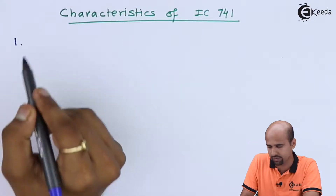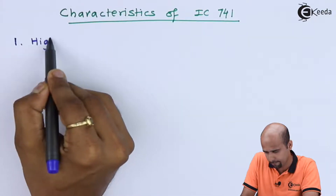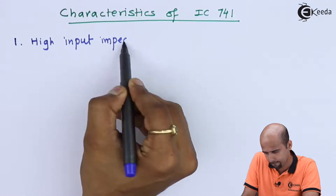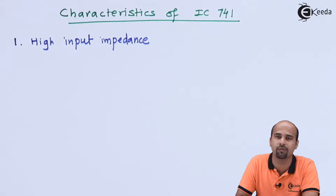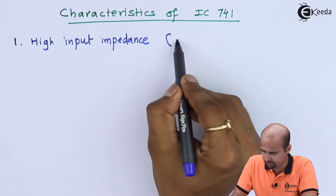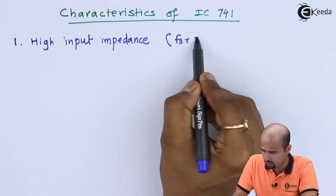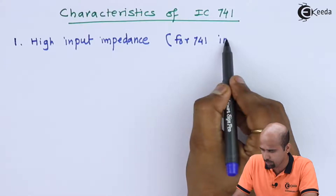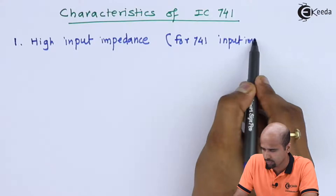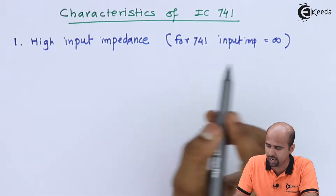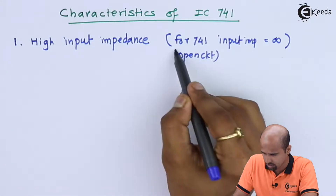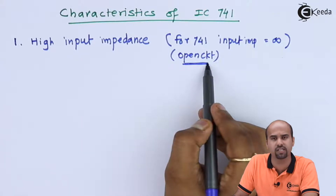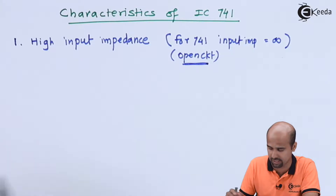The first characteristic we have to learn is very high input impedance, which is a requirement as far as amplification is concerned. Ideally, for 741, input impedance is equal to infinity — ideally that means open circuit. We will relate this open circuit to the internal circuit diagram.